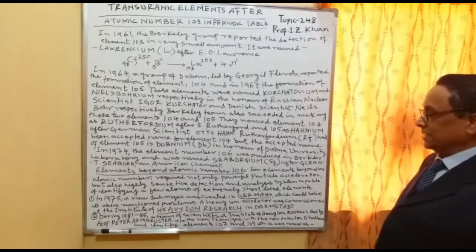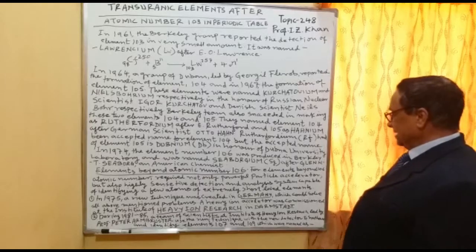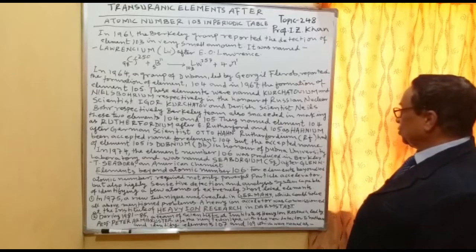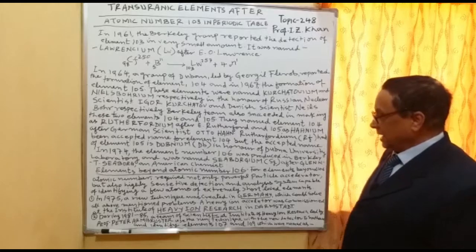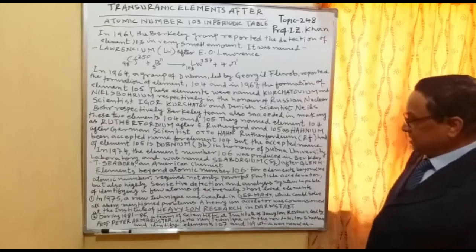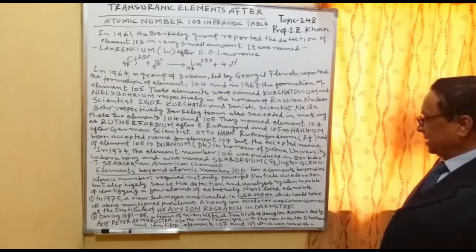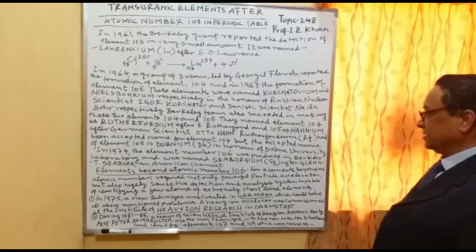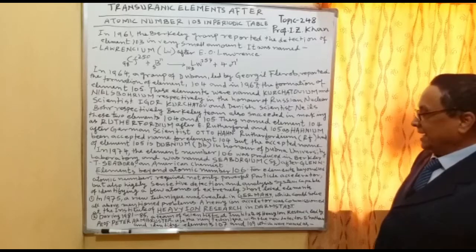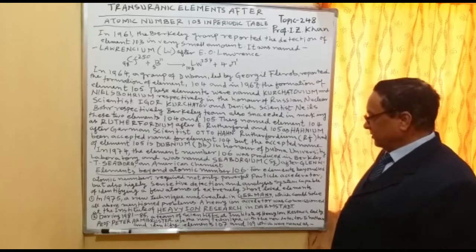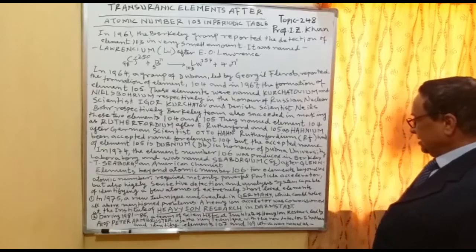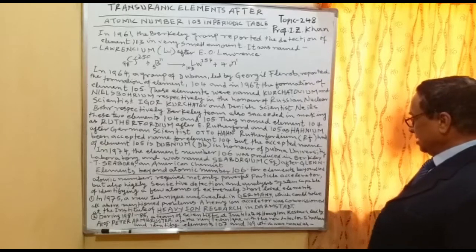In 1975, a new technique was created in Germany which could solve all the above-mentioned problems. A heavy ion accelerator was commissioned at the Institute of Heavy Ion Research in Darmstadt.